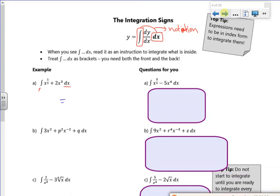So the x to the half becomes x to the 3 over 2, 3 over 2. So that's 2 thirds x to the 3 over 2. Then I've got 2x to the 4 over 4, so that would be a half x to the 4 plus c.